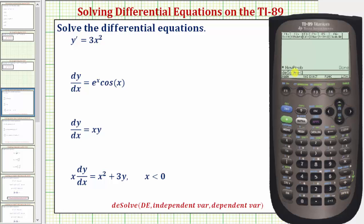And now we enter the differential equation, y prime equals three x squared. So y, the prime is second equal sign, and then we have equals three x raised to the power of two, comma, we enter the independent variable which is x, comma, the dependent variable which is y, close parenthesis, and enter.